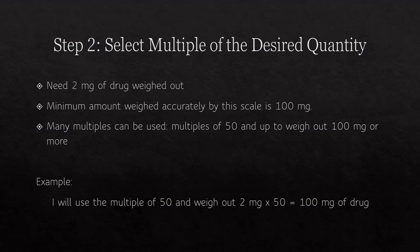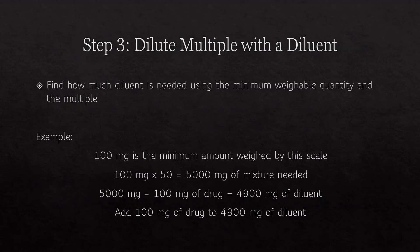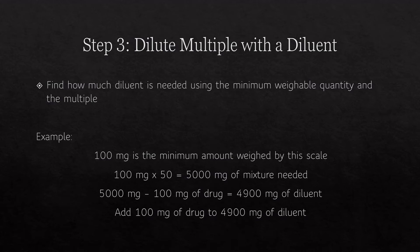Step three: dilute the multiple with a diluent. We need to find out how much diluent is needed using the minimum weighable quantity and the multiple. The minimum weighable quantity is 100 milligrams; 100 milligrams times 50 equals 5,000 milligrams of mixture needed. So 5,000 milligrams minus the 100 milligrams of drug we already weighed out gives you 4,900 milligrams of diluent needed.